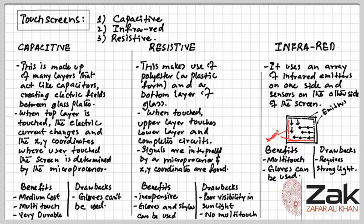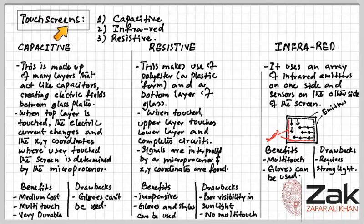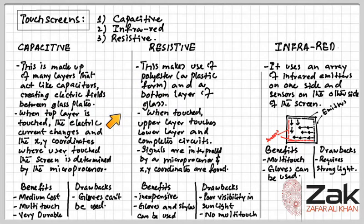Touch screens, which act as both input and output devices, also make use of LCDs and OLED technology. They are particularly used in mobile phones and tablets. We shall now consider LCD capacitive and resistive touch screen technologies only — not OLED.